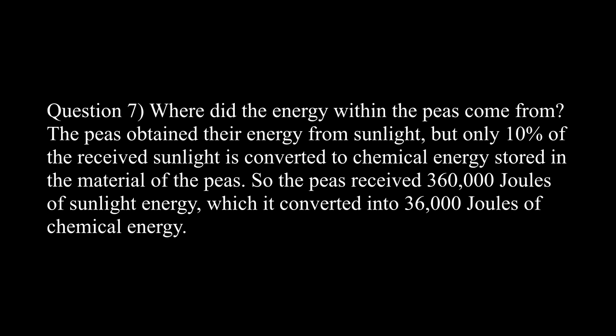Question 7: where did the energy within the peas come from? The peas obtained their energy from sunlight, but only 10% of the received sunlight is converted to chemical energy stored in the material of the pea. So the peas received 360,000 joules of sunlight energy, which it converted into 36,000 joules of chemical energy.